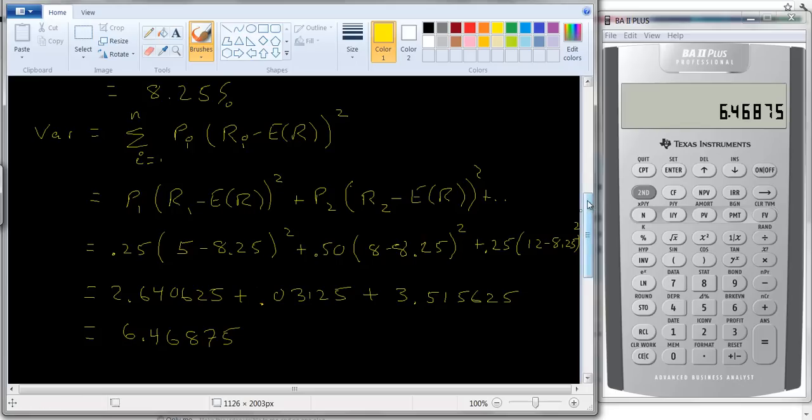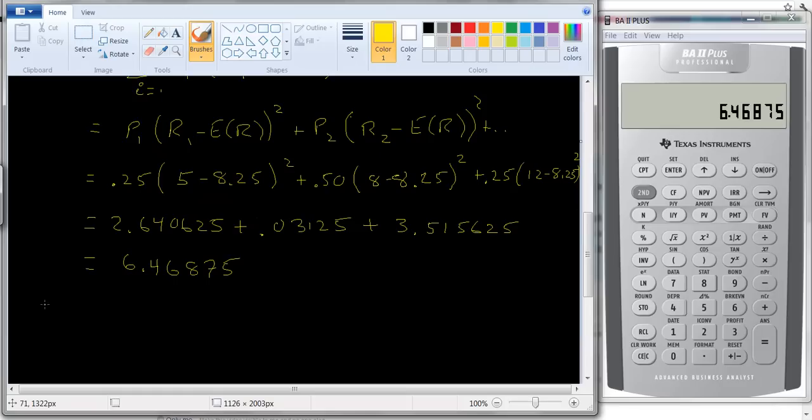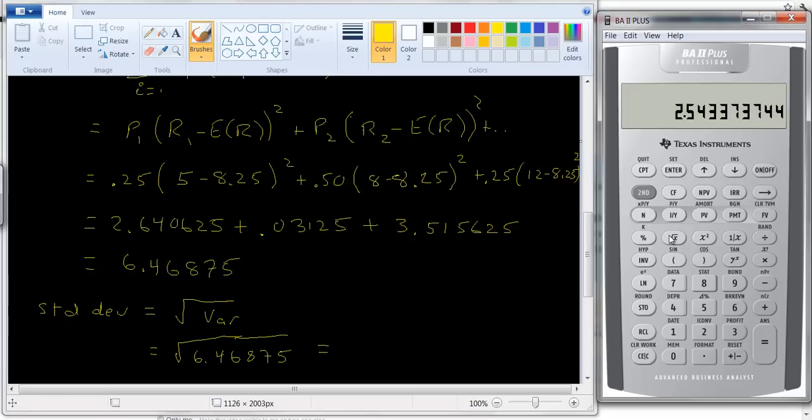Now you probably recall from stats class, you can also compute the standard deviation. The standard deviation is just the square root of the variance. A lot of times we like the standard deviation because it's in the same units as the expected return. Notice here we've squared all these terms, so the variance is in different units than the expected return. So let's take the square root of that. Square root of 6.46875, and we get 2.54 something or other.